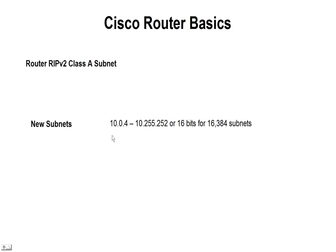The new subnets range from 10.0.4 to about 10.255.252. We have to remember there are going to be 16 bits, giving 16,384 subnets. But you can't use the numbers 5 or 6, so we have to jump up to 8.